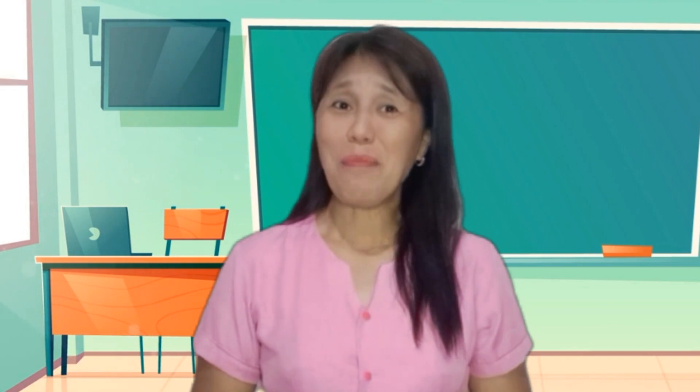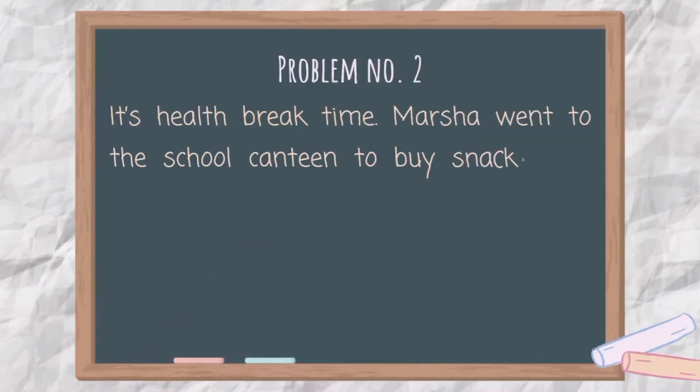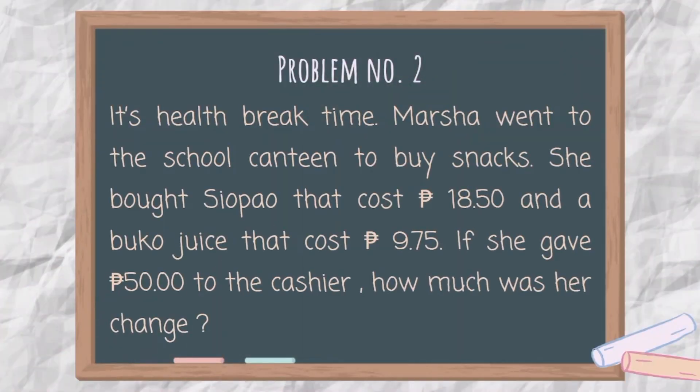Moving on to the next problem. Problem number 2: It's health break time. Marsha went to the school canteen to buy snacks. She bought a snack that cost 18 pesos and 50 centavos and a buko juice that cost 9 pesos and 75 centavos. If she gave 50 pesos to the cashier, how much was her change?